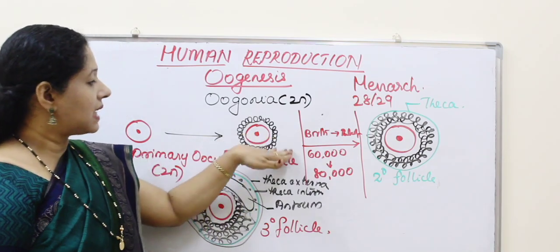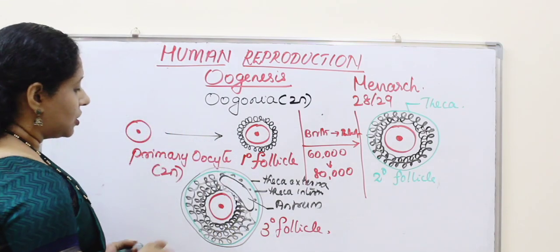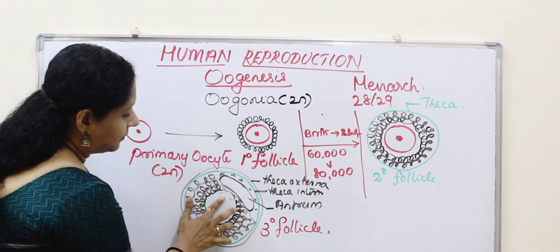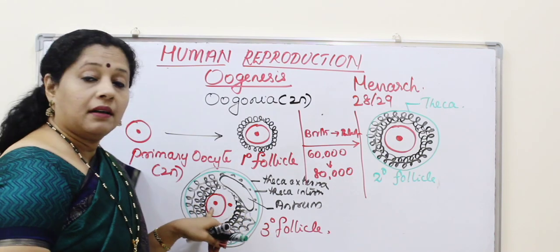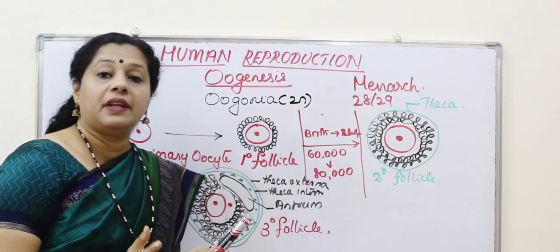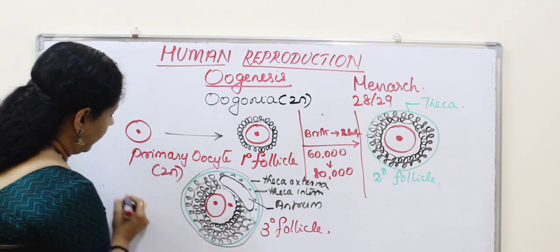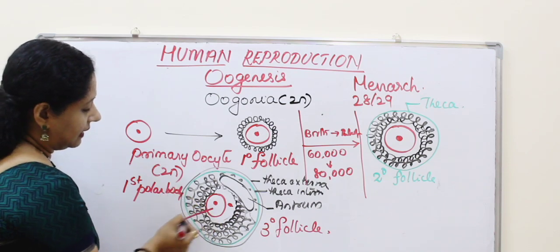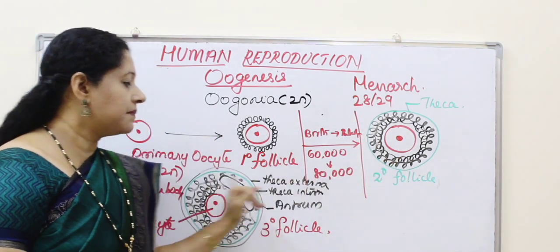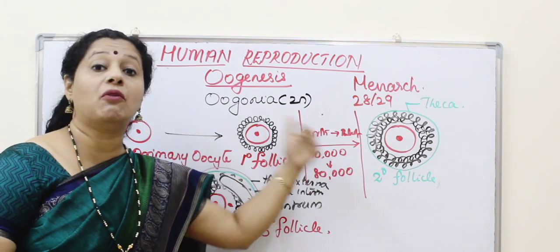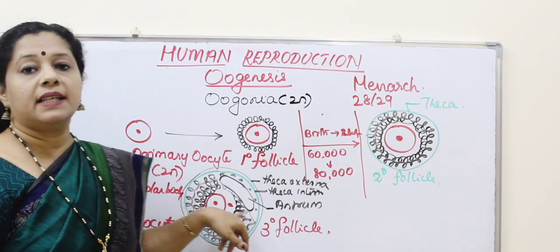Now the tertiary follicle will complete meiosis 1, because the primary oocyte was arrested at prophase 1. It will now complete metaphase 1, anaphase 1, and telophase 1, resulting in two cells. This is a highly unequal division: one cell retains most of the cytoplasm and is called the secondary oocyte, while the other — a mere nucleus with almost no cytoplasm — is called the first polar body.